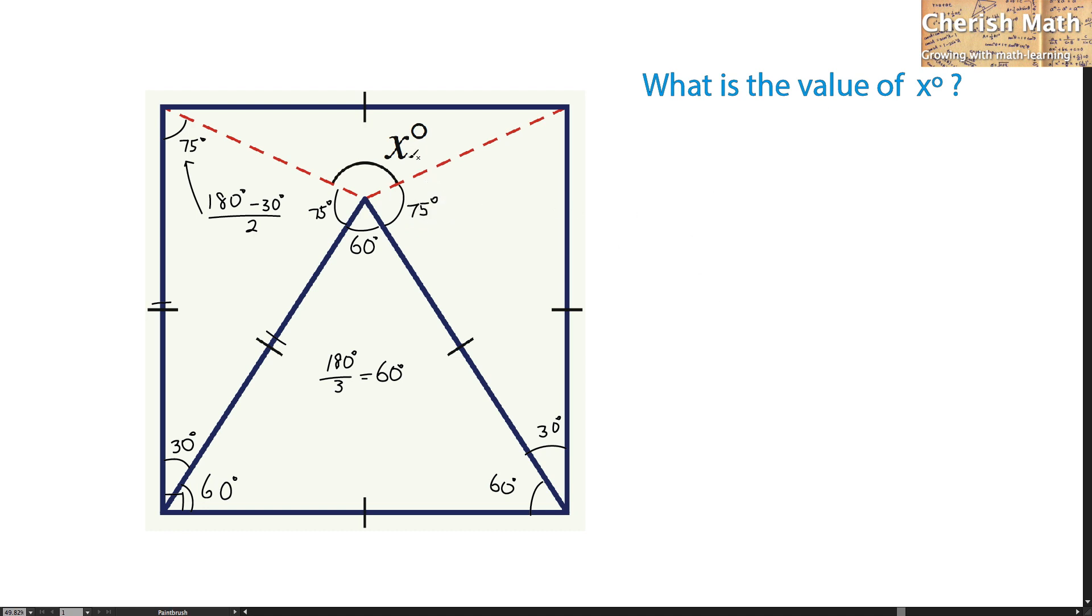Then we find the value of x by using 360 degrees, which is the sum of angles for a circle here, minus 75 degrees, minus 60 degrees, and minus the last part here, which is 75 degrees. And finally we get the angle here as 150 degrees for the value of x.